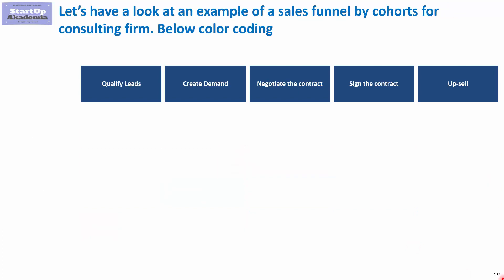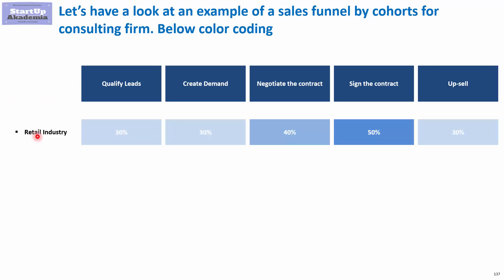Here we have the sales funnel of a consulting firm selling directly to customers. The first stage is when we qualify the leads, then we create demand, negotiate a contract, sign the contract, and upsell. We have to pick a KPI — let's assume it's the conversion rate for each and every stage. And here, as a cohort, we will have industries. The first is the retail industry, and we can see how the conversion rate looks for each stage.